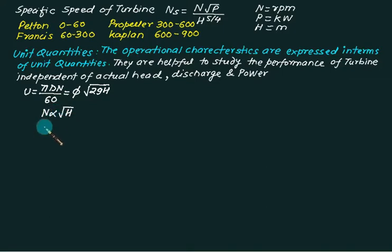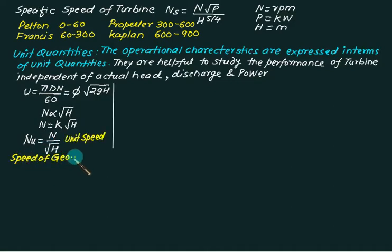So we have n equals to certain constant times root h. We have a unit speed nu equals to n by root h. So constant k is called as unit speed, with the speed of geometrically similar model turbine working under a head of 1 meter.